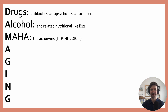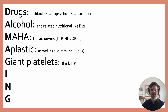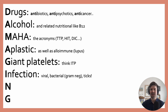Not ITP — all of the rest can lead to a MAHA. A stands for aplastic, as well as alloimmune conditions like lupus. Giant platelets: think ITP. I stands for infection — viral infections absolutely, bacterial infections especially gram negatives, and sometimes ticks.